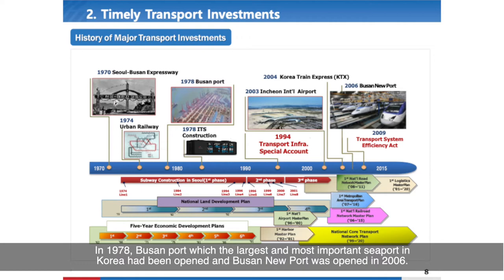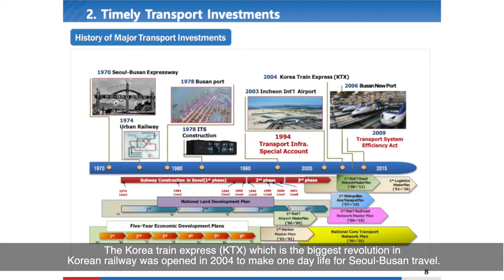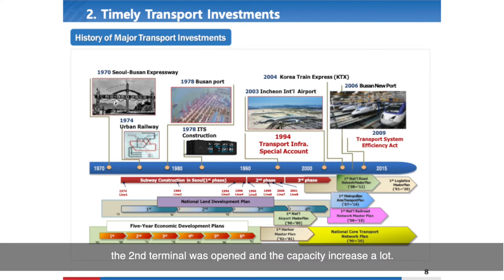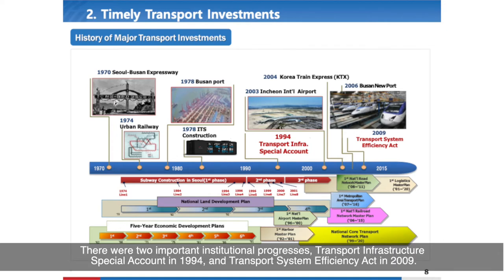Busan New Port was opened in 2006. The Korea Train Express (KTX), which is the biggest revolution in Korea's railway, was opened in 2004 to enable one-day travel between Seoul and Busan. In 2003, Incheon International Airport, one of the highest service-level airports in the world, was opened. In 2018, the second terminal was opened and capacity increased significantly.